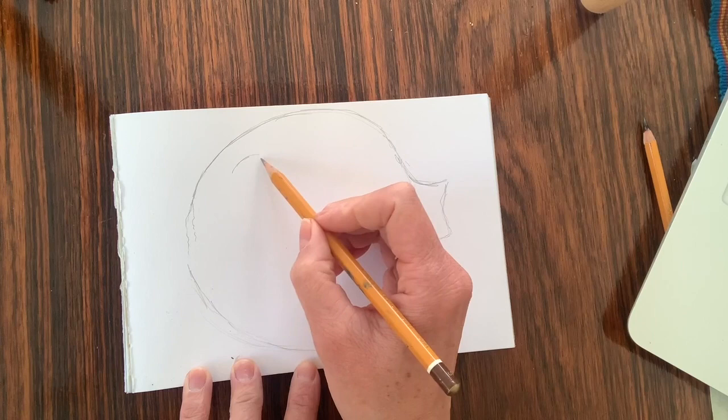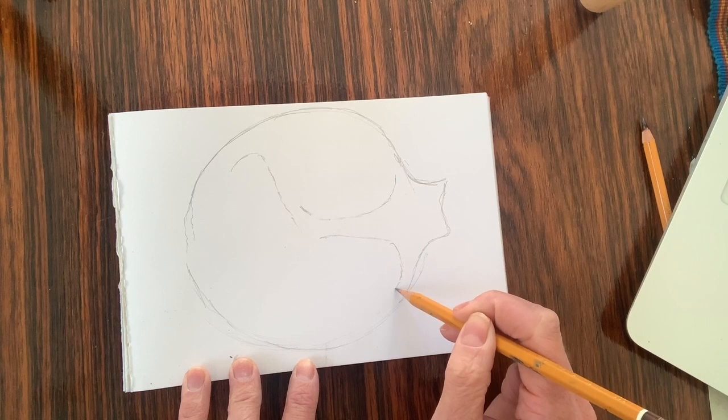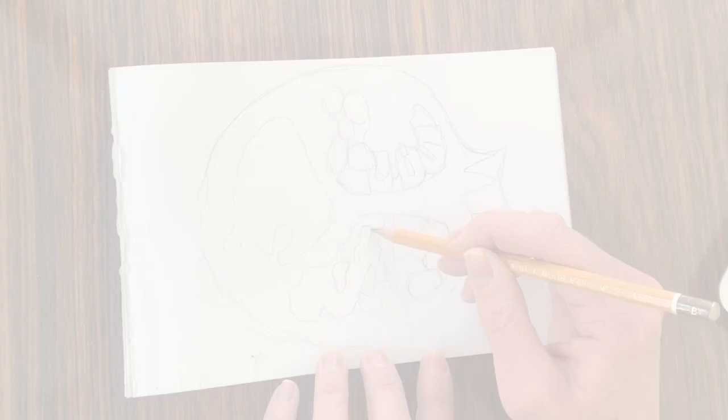Now I'm constantly referring back to the original image here and I'm starting to add in the seeds of the pomegranate. So looking at the image, looking back at my paper and starting to map out lightly where the seeds go.